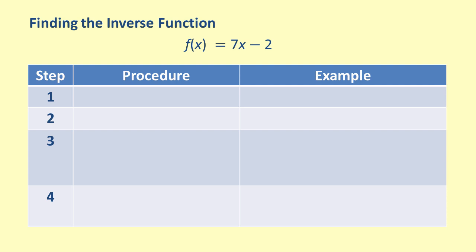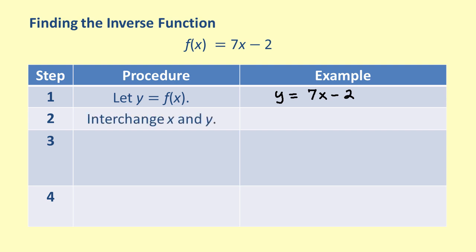To find the inverse of this function, first let y equal f of x so that the entire equation is defined in terms of x and y only. This gives us y equals 7x minus 2. Next, interchange x and y. Now we have x equals 7y minus 2.